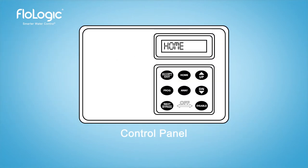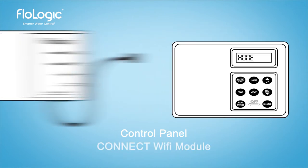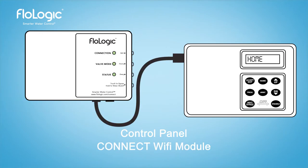The FloLogic system's command and control is local to the system, allowing it to fully operate without the app-enabling Connect Wi-Fi module and independent of an internet connection. When the Connect Wi-Fi module is connected, all changes made from the control panel are reflected on the app and vice versa.